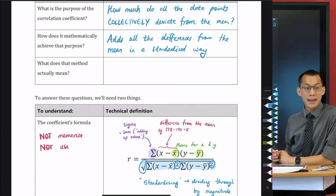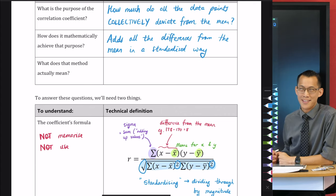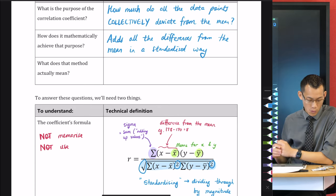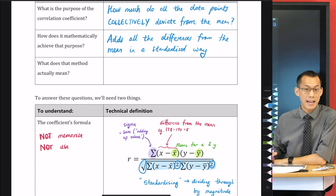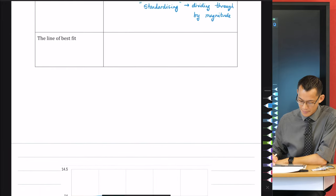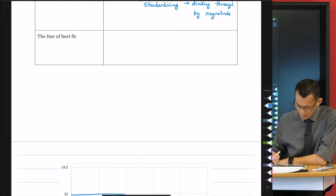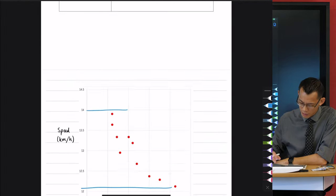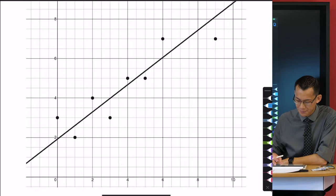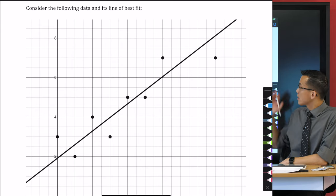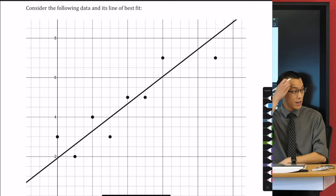Now, as to the question of what does that method actually mean, what is the meaning of it, we need to now turn over the page and have a look at an actual data set. We're going to consider this data and its line of best fit.